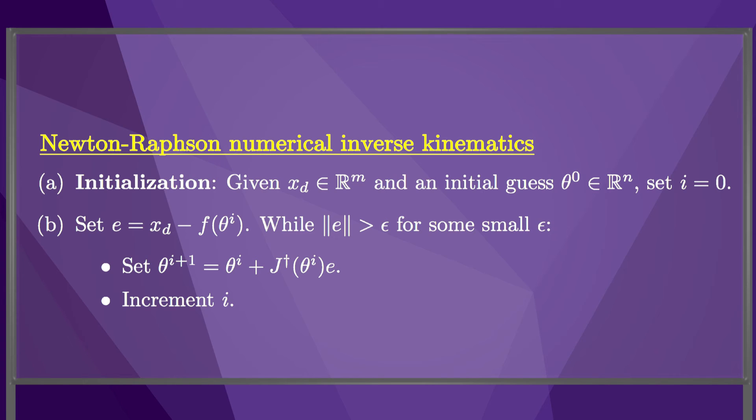We can use this algorithm inside a robot controller. At every time step, an updated desired end-effector configuration x-d is sent to the controller, and it calculates an appropriate joint vector using Newton-Raphson. The previous joint vector is a good initial guess to the new joint vector, since the updated x-d should be close by the previous x-d.